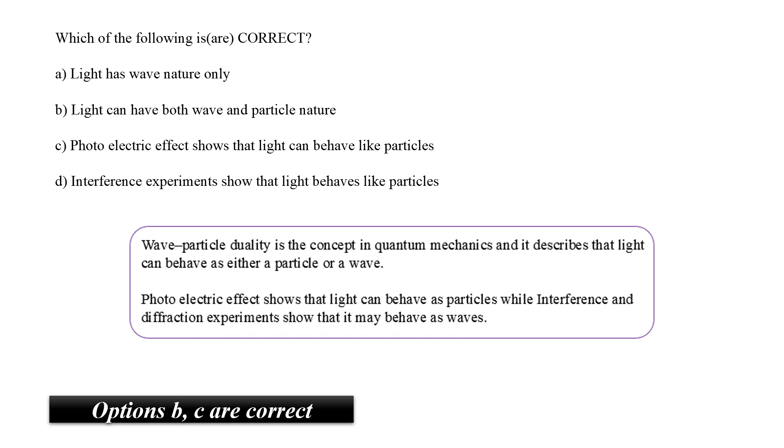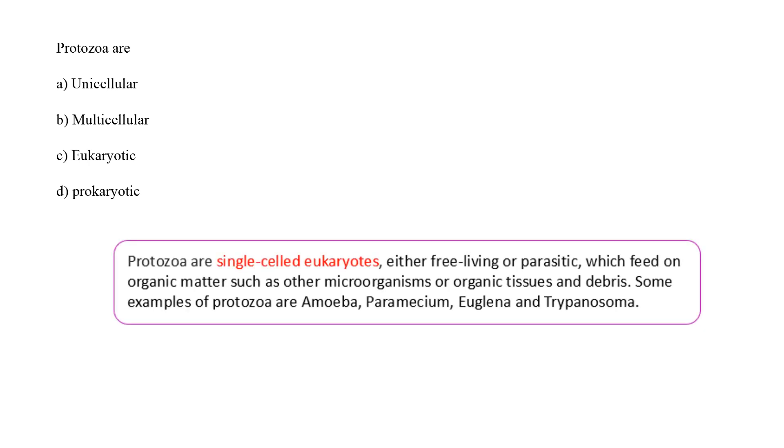The next question is Protozoa are. Protozoa or protozoan singular are single-celled eukaryotes either free-living or parasitic which feed on organic matter such as other microbes or debris such as amoeba, paramecium, euglena, trypanosoma, etc. Protozoa are therefore unicellular eukaryotic organisms. Options A and option C are the correct answers.